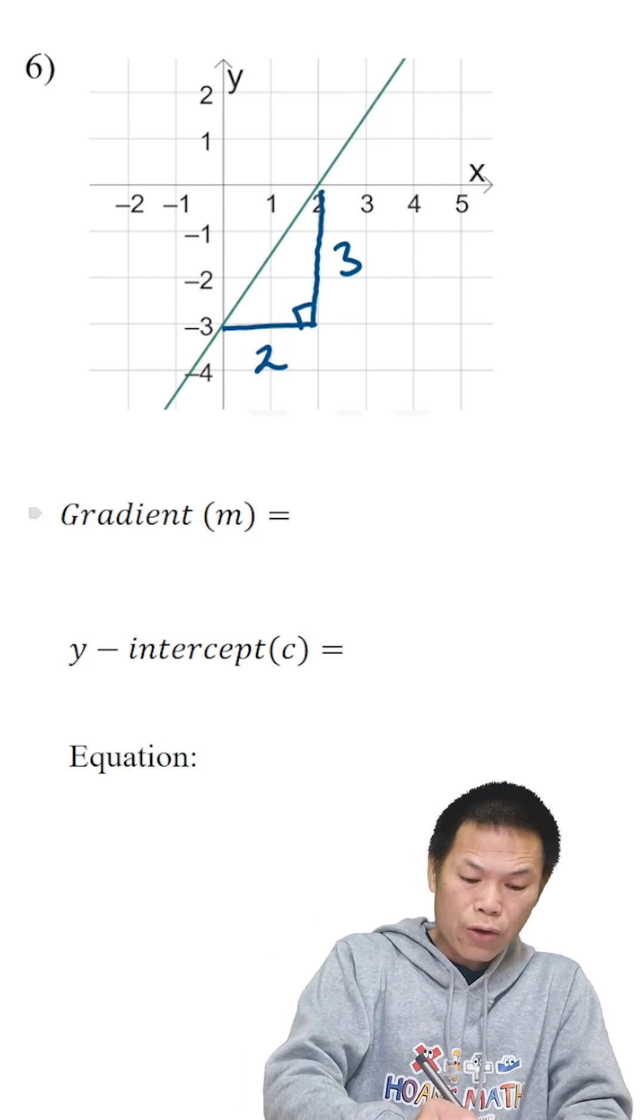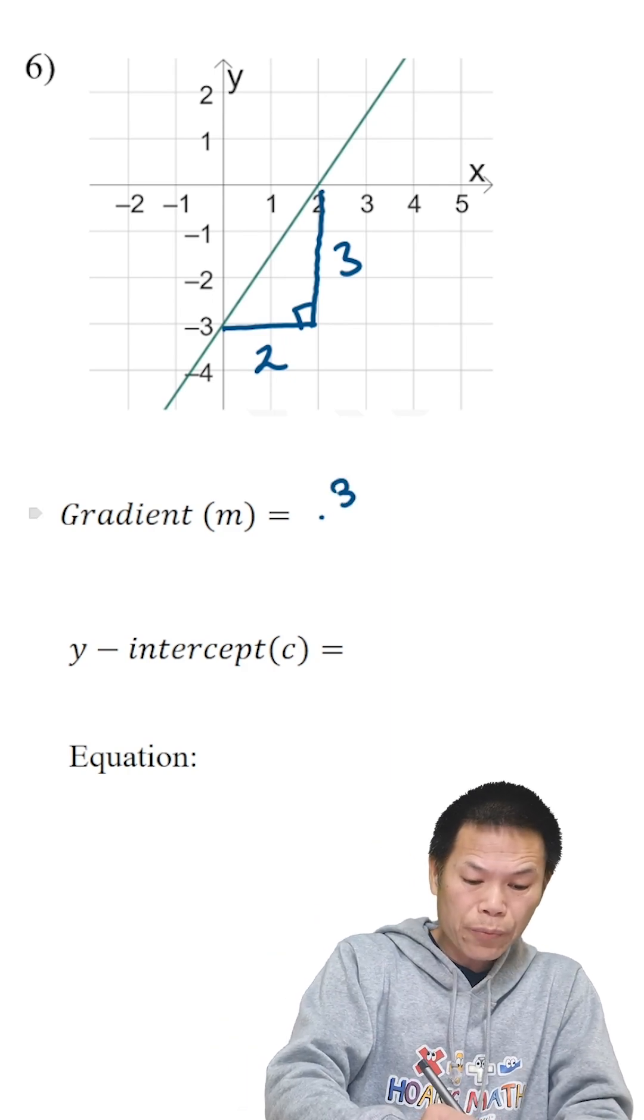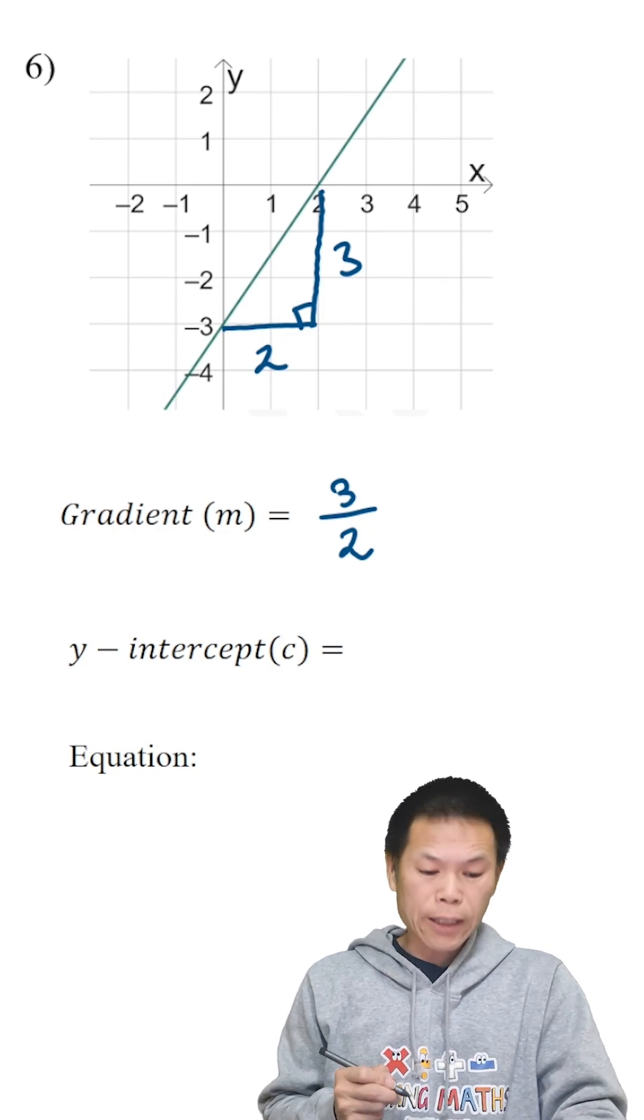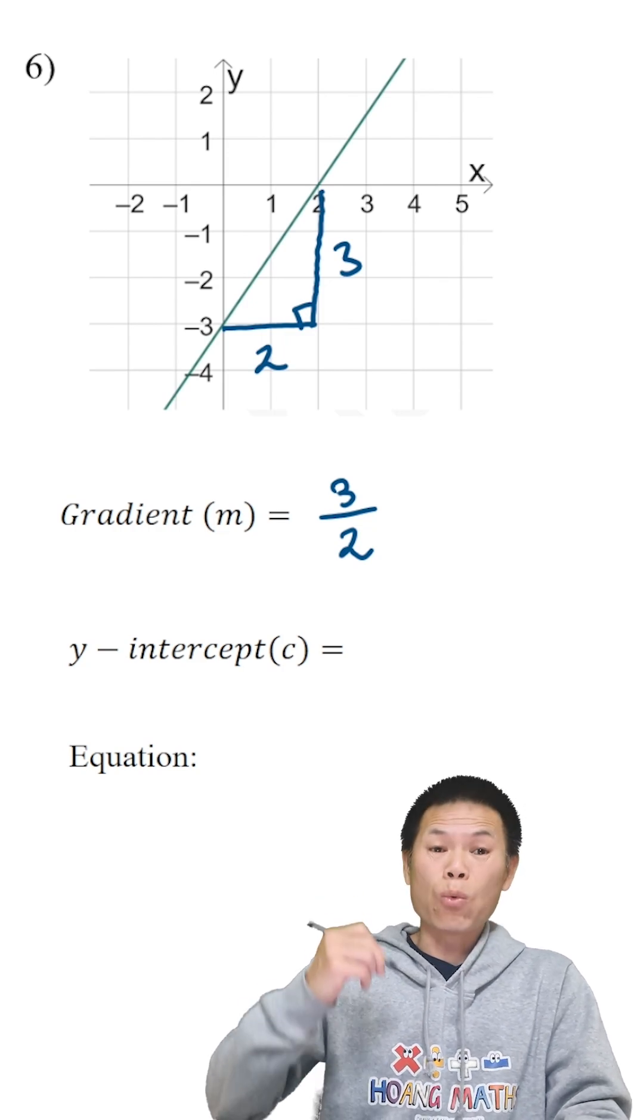And we know that the gradient is positive, so therefore rise is 3, run is 2, and that's it. That's for the gradient and the y-intercept.